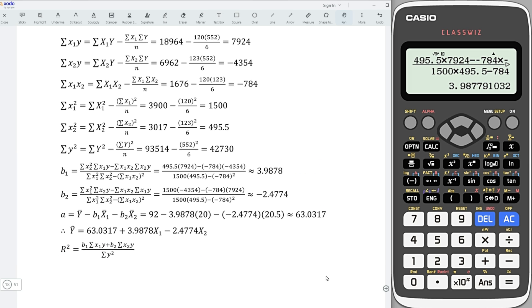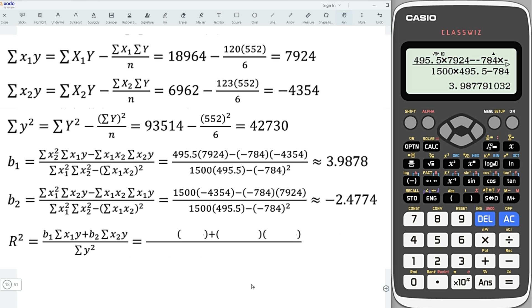Next, let's determine the r square by using the formula. Substitute the values accordingly. b1, put it here. b2, put it here. Sum of squares for the variables x1 and y, put it here.